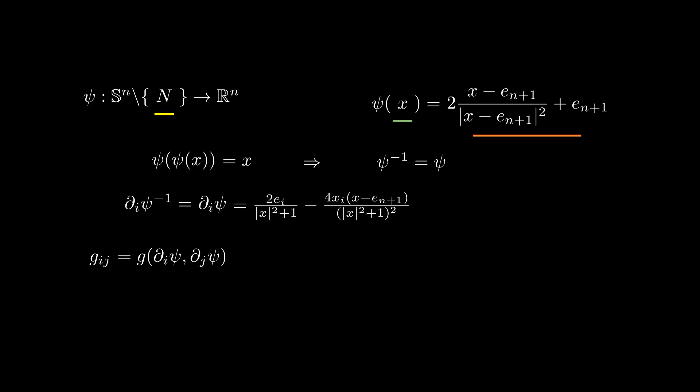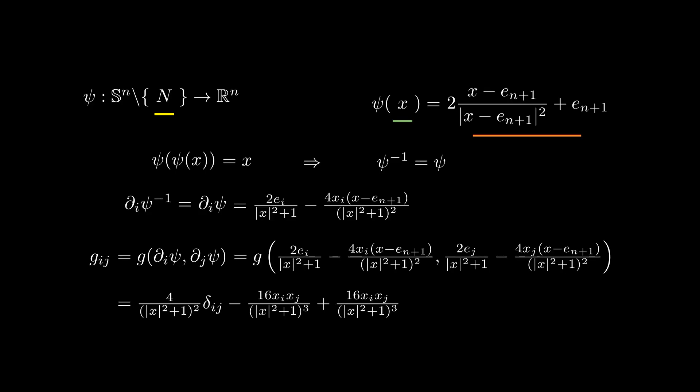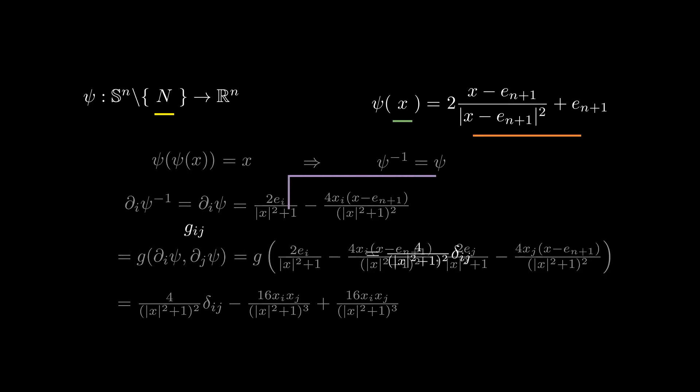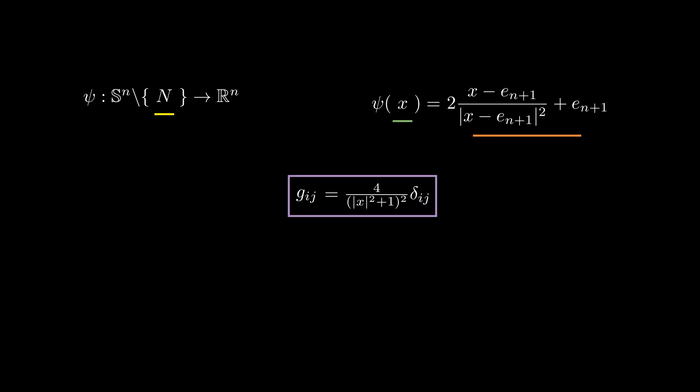Now, when we take the inner products of these partial derivatives with respect to i and j, most terms cancel out and we end up with this pretty short formula. Later we will use this formula to understand the geodesics of the sphere and compute its curvature.